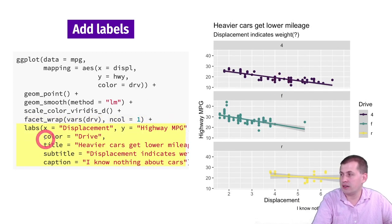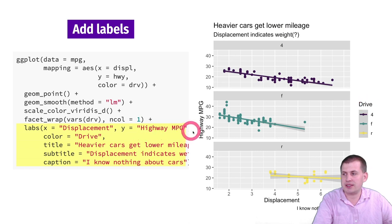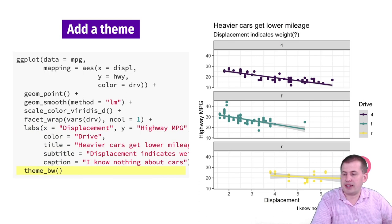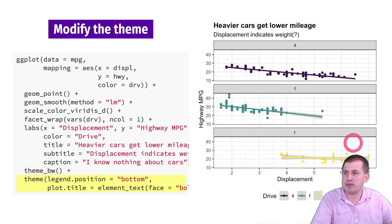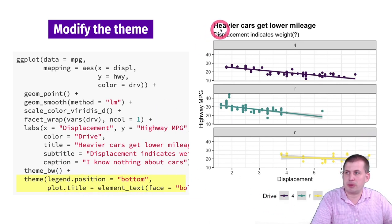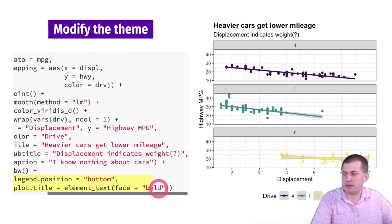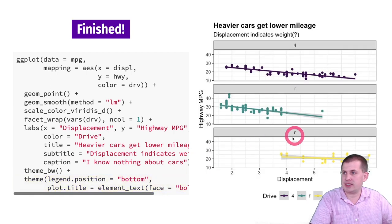We can add a labels layer with titles, subtitles, legend titles, axis titles, and captions. Then we add a theme — switching from theme_gray to theme_bw. We can also do theme tweaks: setting legend.position to 'bottom' and making the plot title bold with the appropriate element_text() code. And that's the finished product.